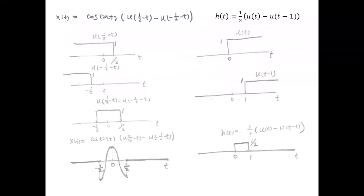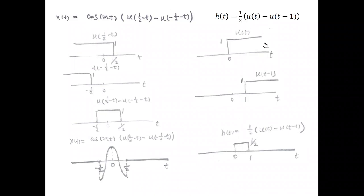Let's look at the plots of these two signals. For h(t) on the right: we plot u(t) minus u(t−1) shifted by one unit to the right. The difference gives a platform ranging from 0 to 1, but with height 1/2 — don't forget the 1/2 in front. For x(t), first look at the part inside the brackets: the difference between two steps. u(1/2−t) extends to the left with jumping point at 1/2; u(−1/2−t) also extends to the left with jumping point at −1/2. Their difference is a platform ranging from −1/2 to +1/2.